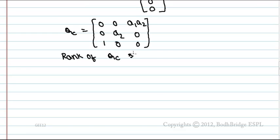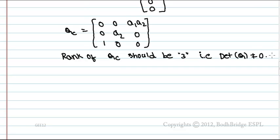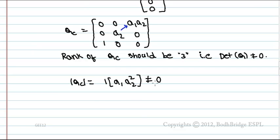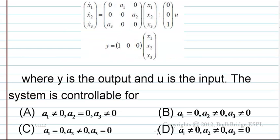Rank of Qc should be 3, meaning determinant of Qc ≠ 0. The determinant evaluates to a1·a2, so for controllability we need a1 ≠ 0 and a2 ≠ 0, with a3 being free — corresponding to option (d): a1 ≠ 0, a2 ≠ 0, a3 = 0.